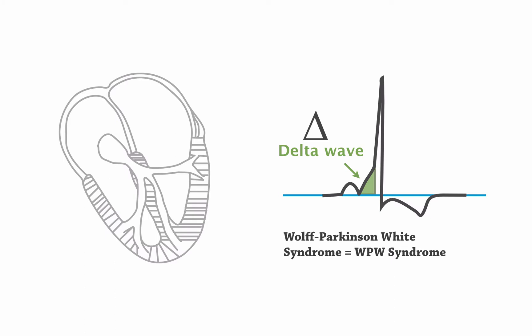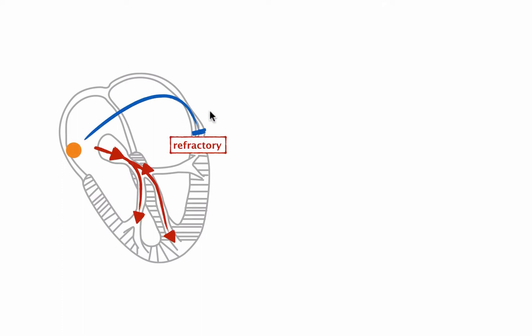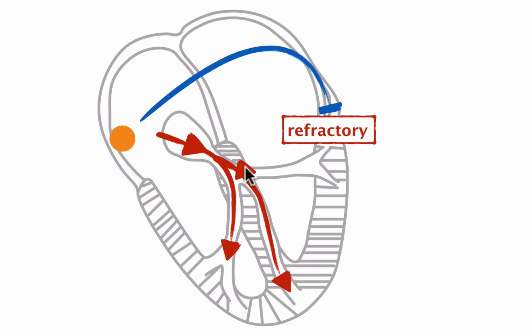One of these reentrant tachycardias can occur in patients with Wolff-Parkinson-White syndrome. In WPW syndrome, the atrial impulse can depolarize the ventricles through two different pathways: the AV node, and the bundle of Kent. If there were only the AV node, the QRS complex would look completely normal and narrow. But since there is also the bundle of Kent, we can also see a delta wave. Now, when a premature atrial beat occurs, it reaches the bundle of Kent in its refractory period, so the impulse can no longer travel down through the bundle of Kent. However, the AV node was already out of its refractory period, so the impulse could travel down to the ventricles through the AV node, and the QRS complex would look completely normal without a delta wave.